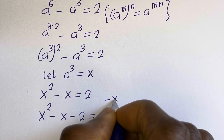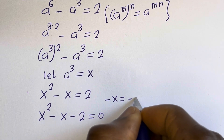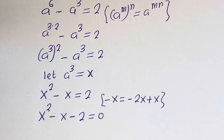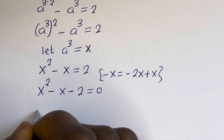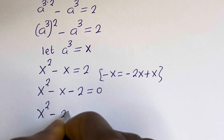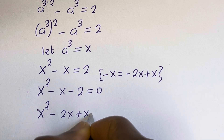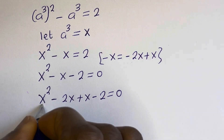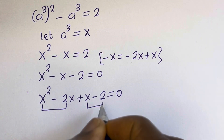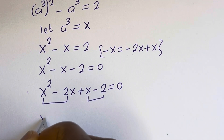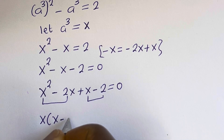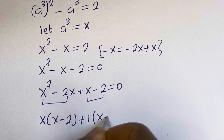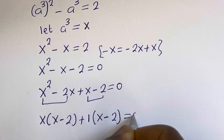Take note that the minus x can be written as minus 2x plus x. So we have x squared minus 2x plus x minus 2 is equal to 0. Let's pair the first two terms and the last two terms. x is common in the first pair, so we factor x out: x bracket x minus 2, plus 1 bracket x minus 2, is equal to 0.